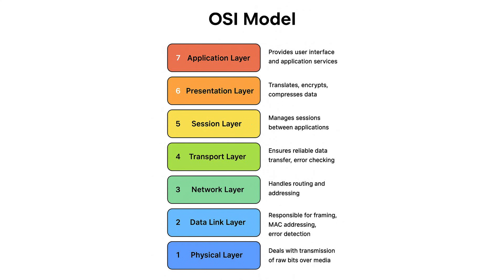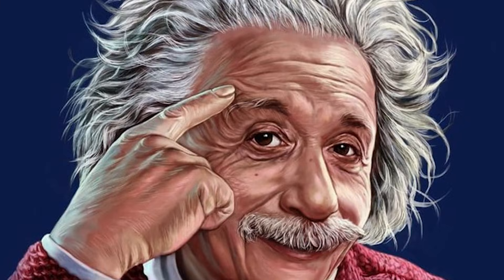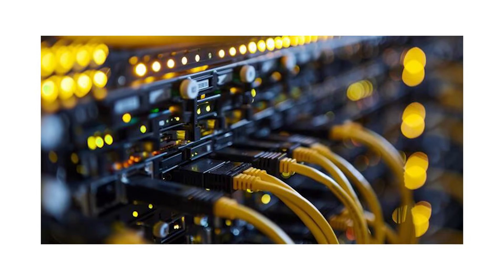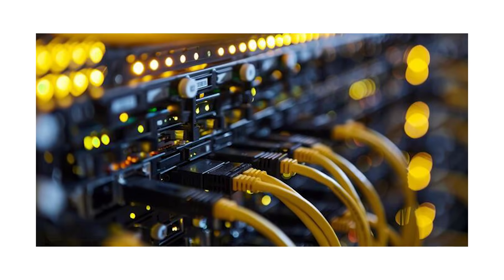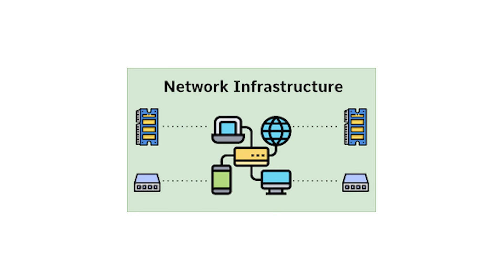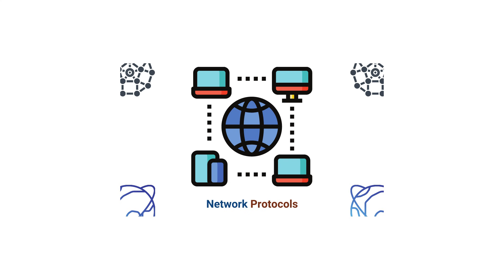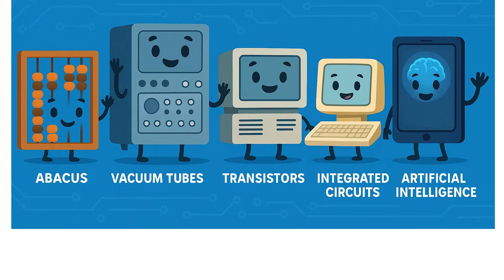If you understand all seven layers of the OSI model and how they work together, congratulations — you're in the top 1% of people who actually know how network communication functions. You can build internet infrastructure from the ground up, design new protocols, and understand one of the most important technological frameworks in human history.